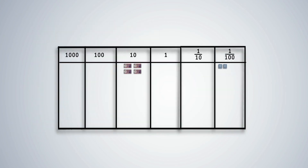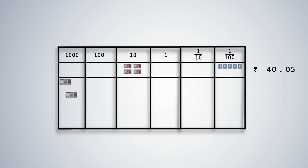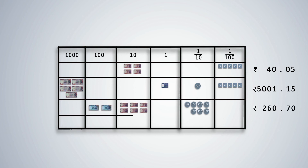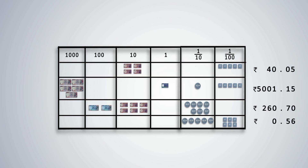Write some decimal numbers on the board. Let students work in small groups and represent these numbers using play money. Once they have understood this, ask them to represent the amounts using place value strips. Give them a clue that the first one should be read as 40.05.